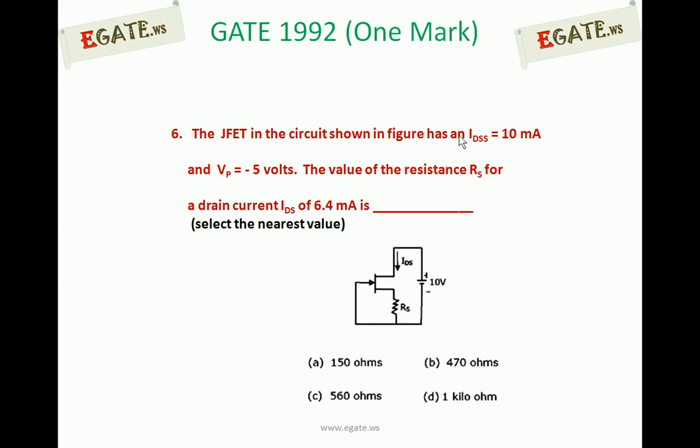The JFET in the circuit shown in figure has IDSS of 10mA, that is drain to source saturation current of 10mA, and pinch off voltage of minus 5V. The value of the resistance RS for a drain current IDS of 6.4mA is: